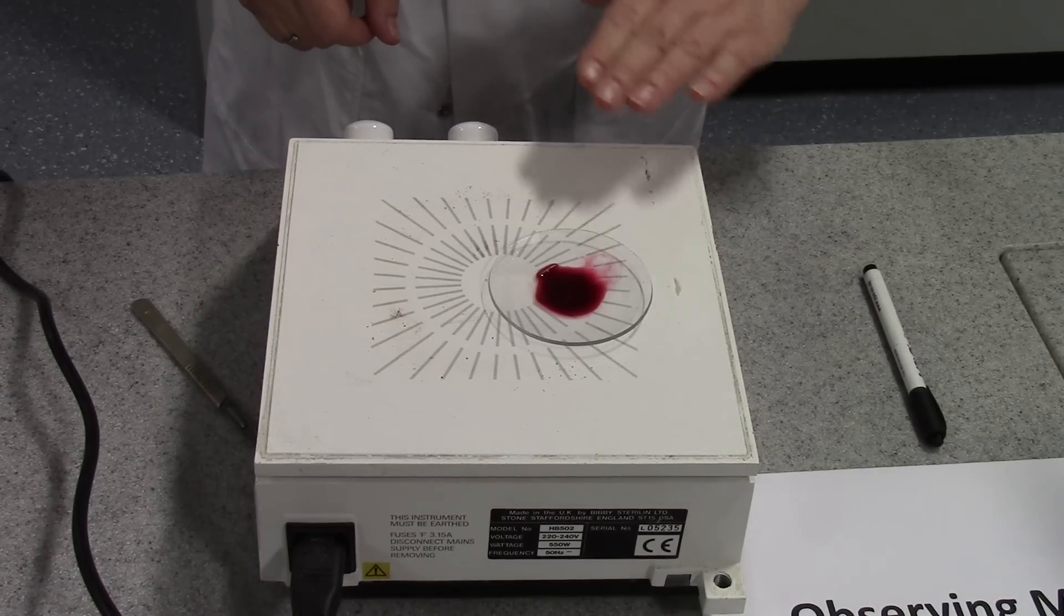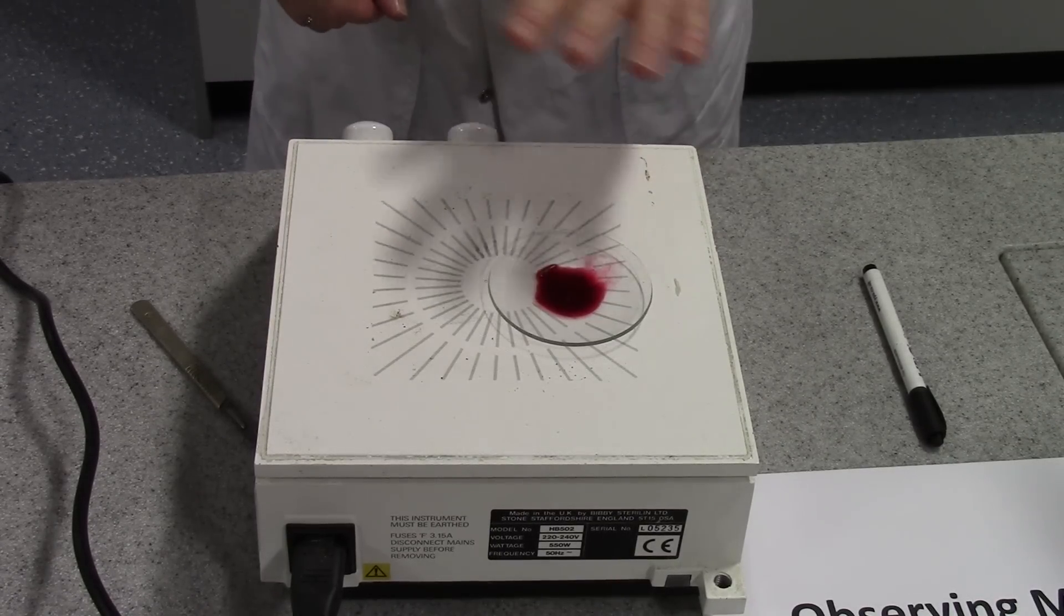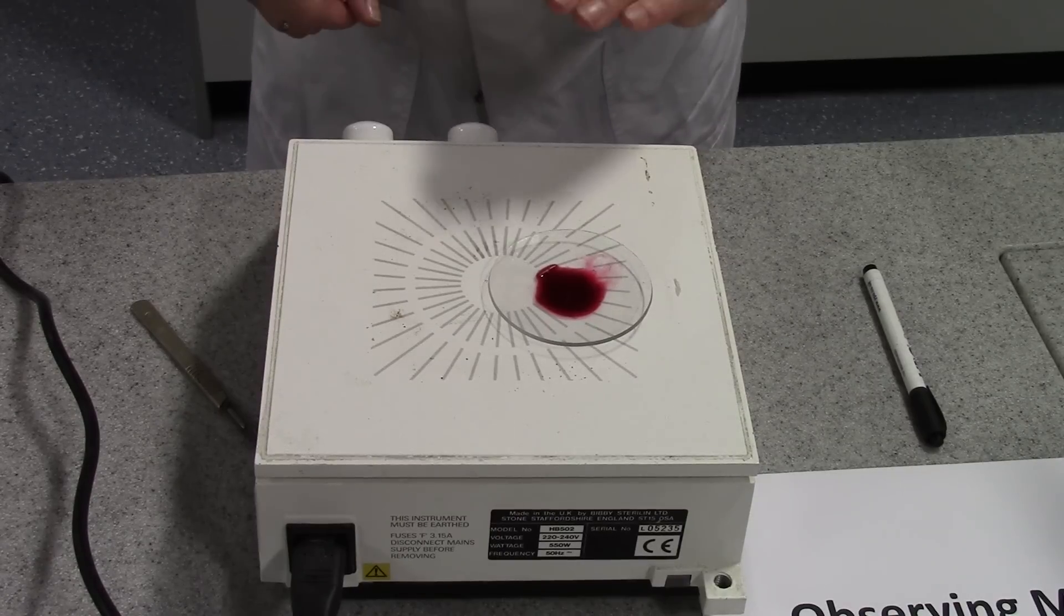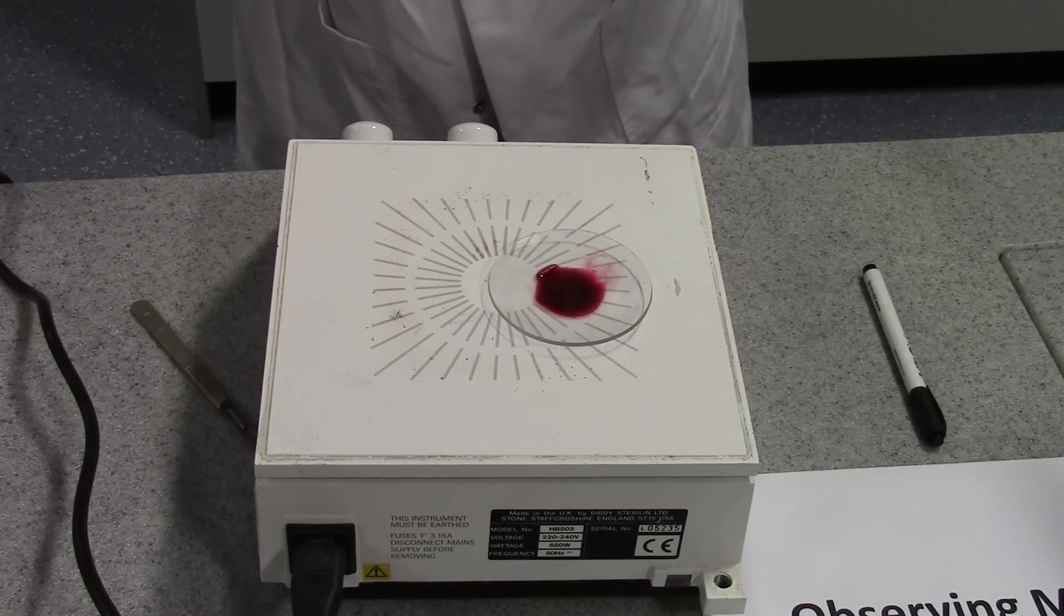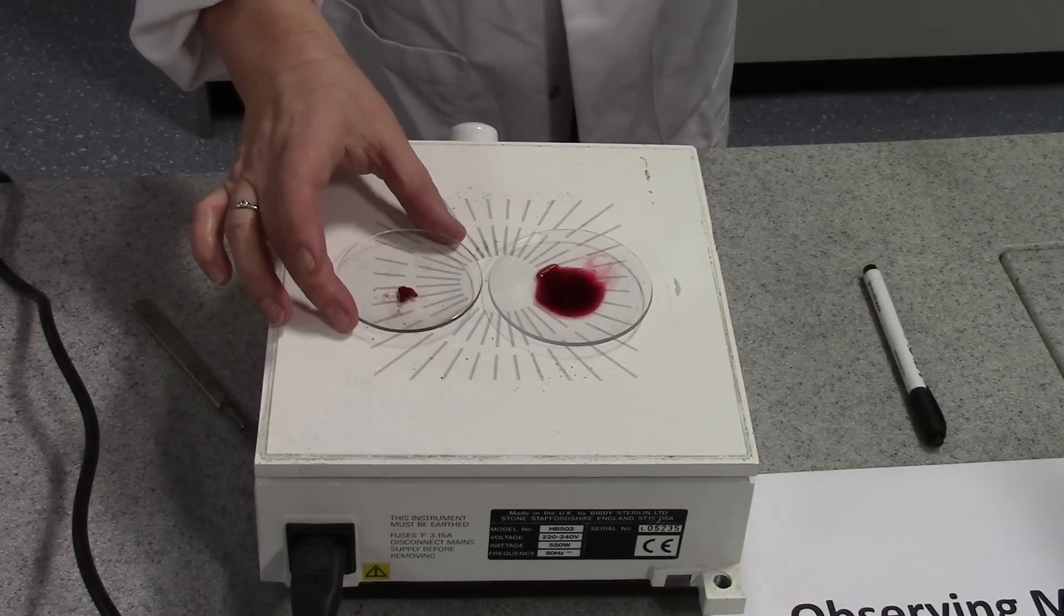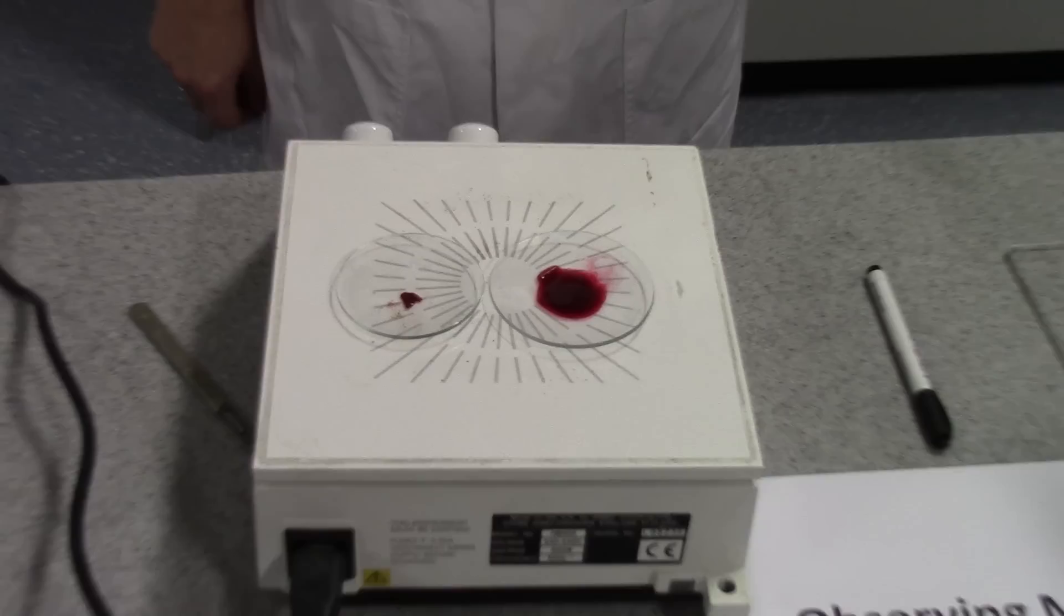You don't want it to dry out but you do want the stain to penetrate the root tips and you want the most of the liquid there to evaporate. After 5 minutes you should find that it looks something like that. At this point you can actually turn your hot plate off and carry on with the staining procedure.